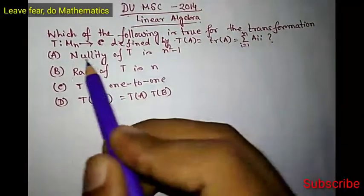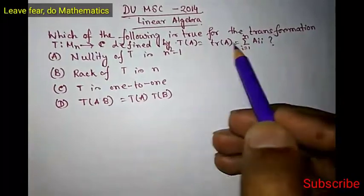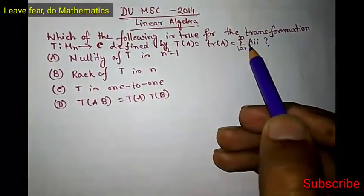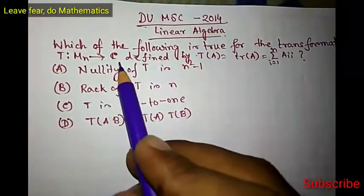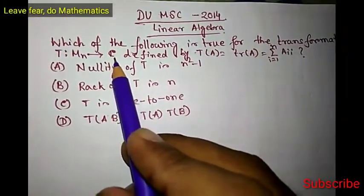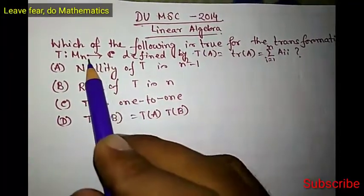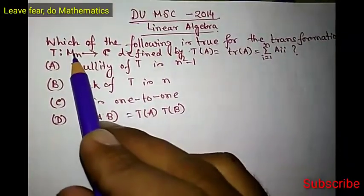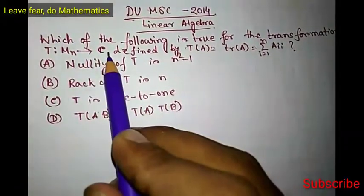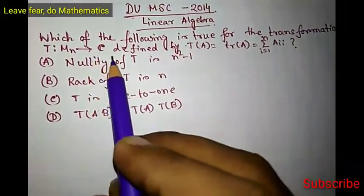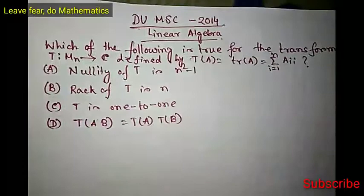Now look here, M_n is the vector space of all n by n matrices and C is the field of complex numbers. But one thing, since the image is C, you have to consider that for this M_n, the base field is C. So for domain and codomain, both the base field is C. Now we will try to solve the problem.